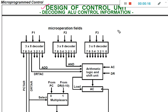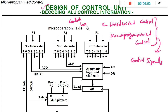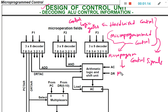We already know the bifurcation between hardwired control and microprogrammed control. Both of these are going to generate the control signals. In case of hardwired control, we generate control signals based on control logic gates, which need a hardware architecture. Whereas in microprogrammed control, we perform the control mechanism using a micro program, which contains several micro operations.